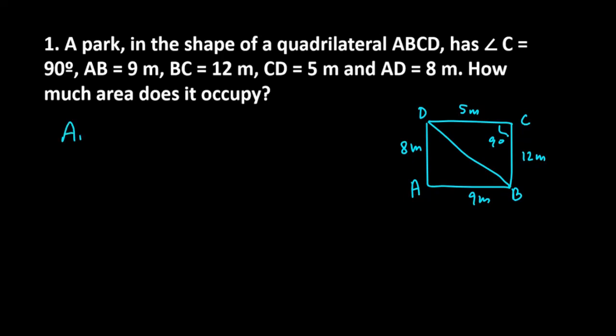First, if we want to find the area, we can find the area of triangle DCB because it's a right angle triangle. So it's half times base times height. Base is 5, height is 12. This gives us 30 meter square as the area.